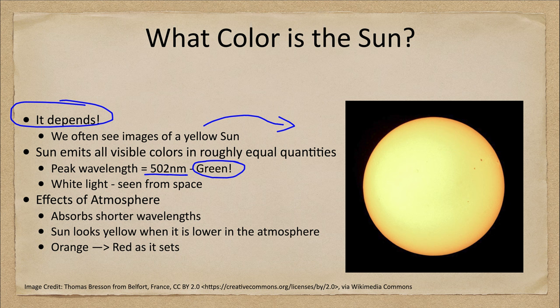Green would be the peak, and then things around that would start to fade off. We'd have less in the red and less in the violet on the edges of the spectrum. However, the whole combination of light that we see from the Sun is what our eyes have developed to see as white light. So if we look from space, we would see the Sun as being white — that is just our definition of white light.